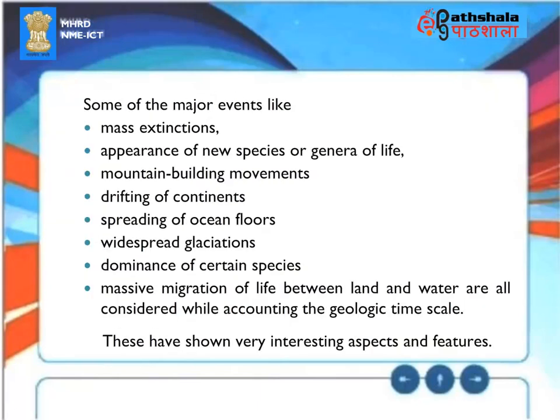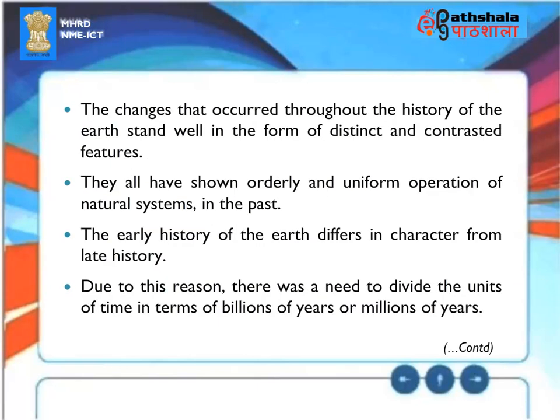Some of the major events like mass extinctions, appearance of new species or genera of life, mountain building movements, drifting of continents, spreading of ocean floors, widespread glaciations, dominance of certain species, and massive migration of life between land and water are all considered while accounting the geologic time scale. The changes that occurred throughout the history of the Earth stand in the form of distinct and contrasted features, showing orderly and uniform operation of natural systems in the past. The early history of the Earth differs in character from late history, creating a need to divide the units of time in terms of billions of years or millions of years.